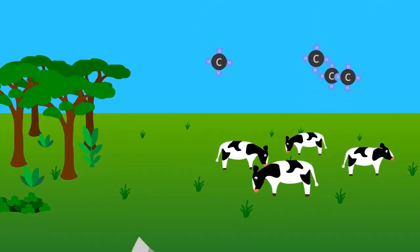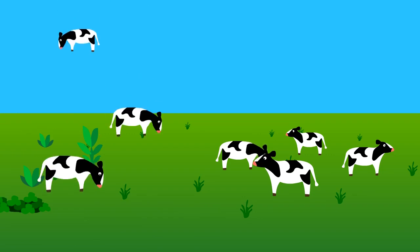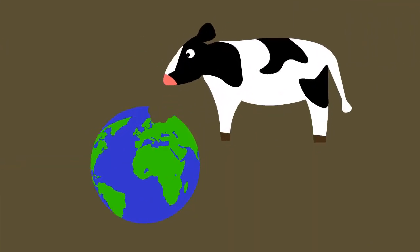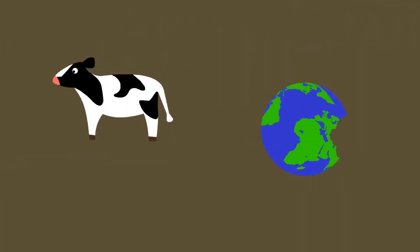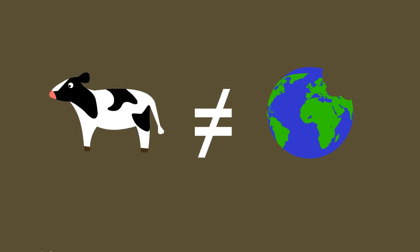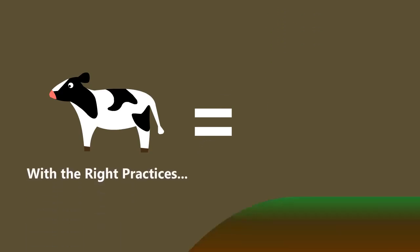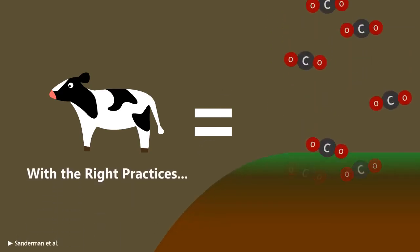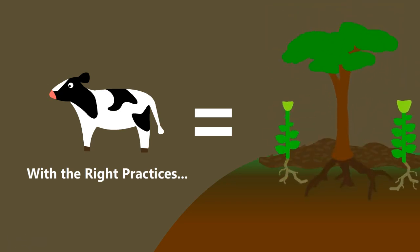From the release of methane to clearing forests for pasture land, cattle raising is known for being very environmentally destructive. But this is not inherent to grazing animals. If the right practices are put in place, enormous amounts of carbon can be sequestered into the ground, soil can be built, and even desertification can be reversed in a matter of years.